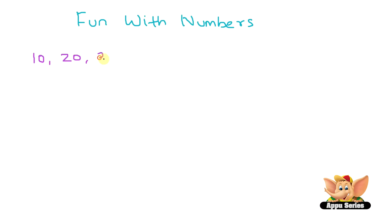Then after 20, it's 30, then 40, then 50, 60, and so on. So you're just skipping numbers in 10.